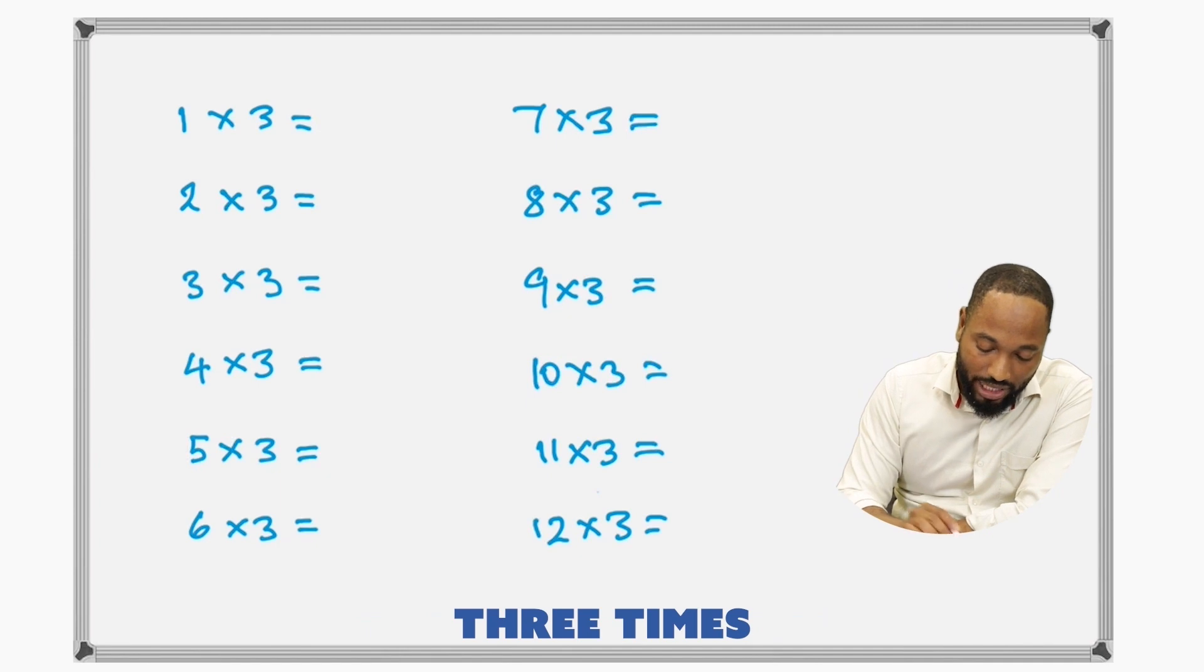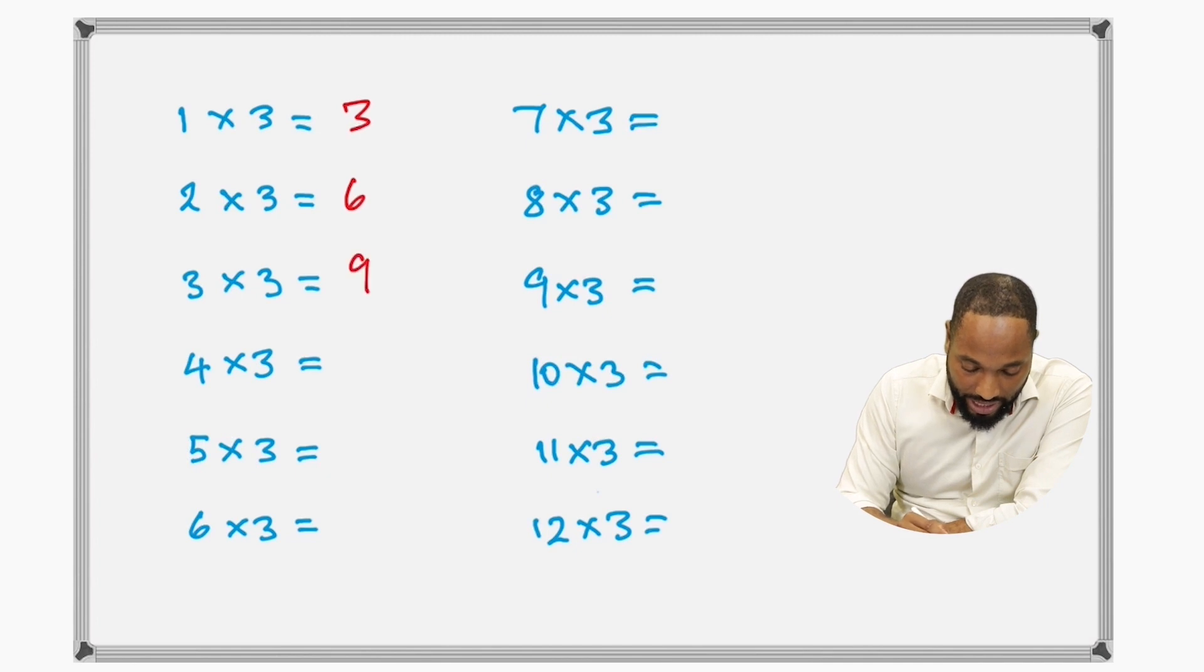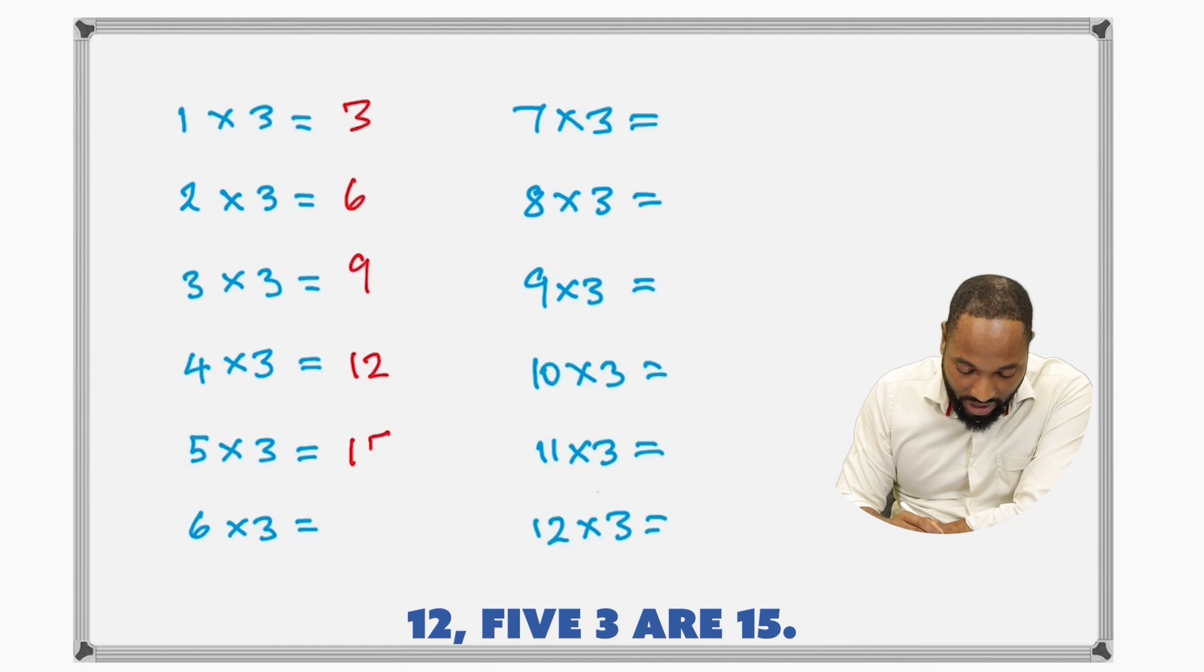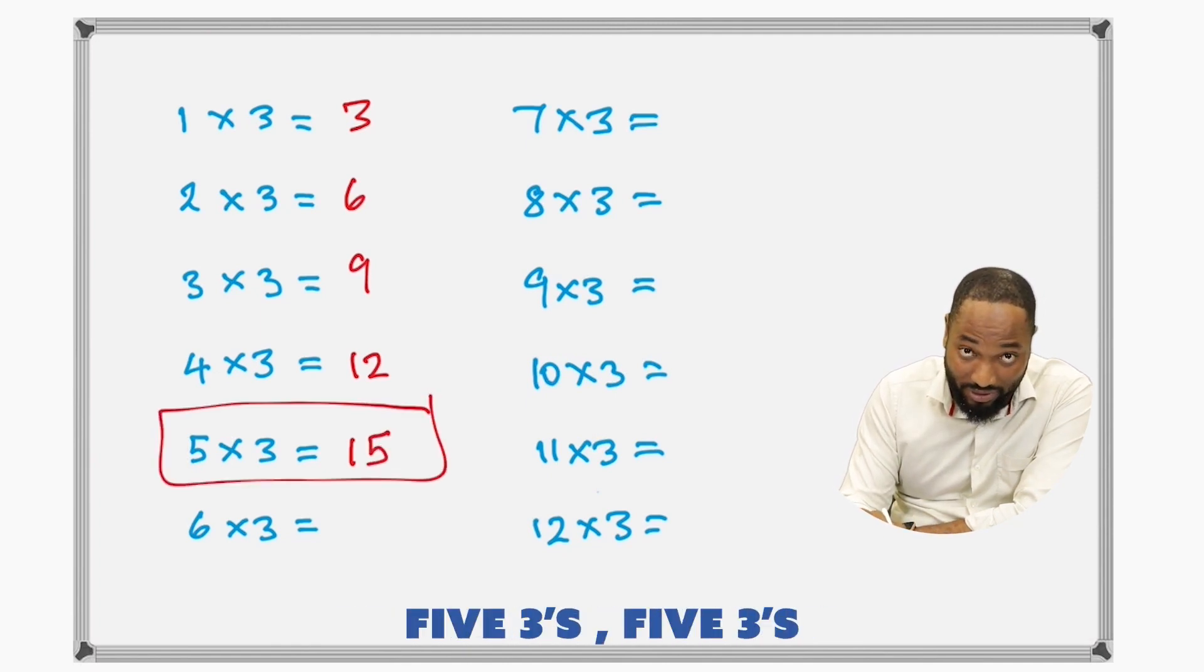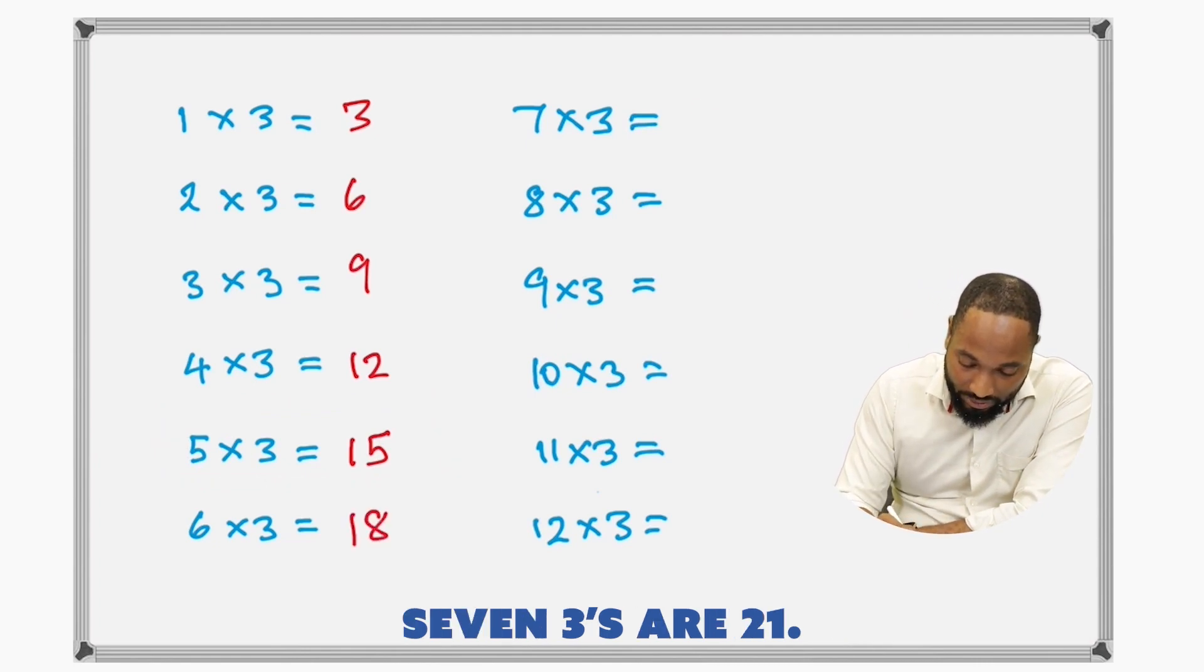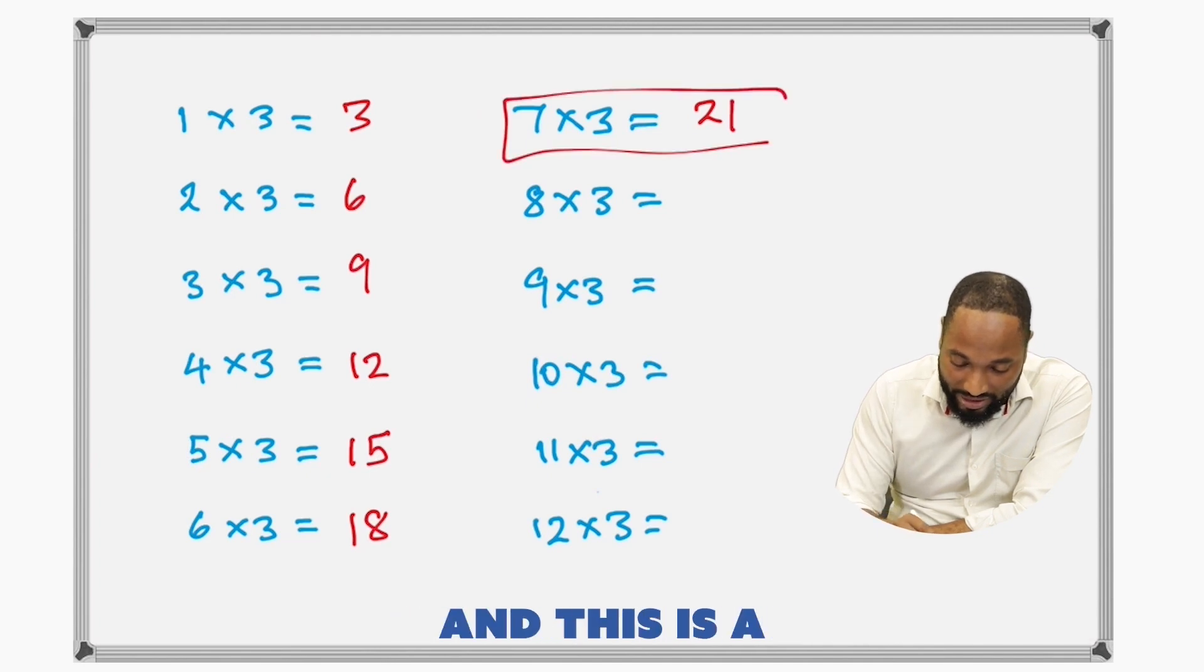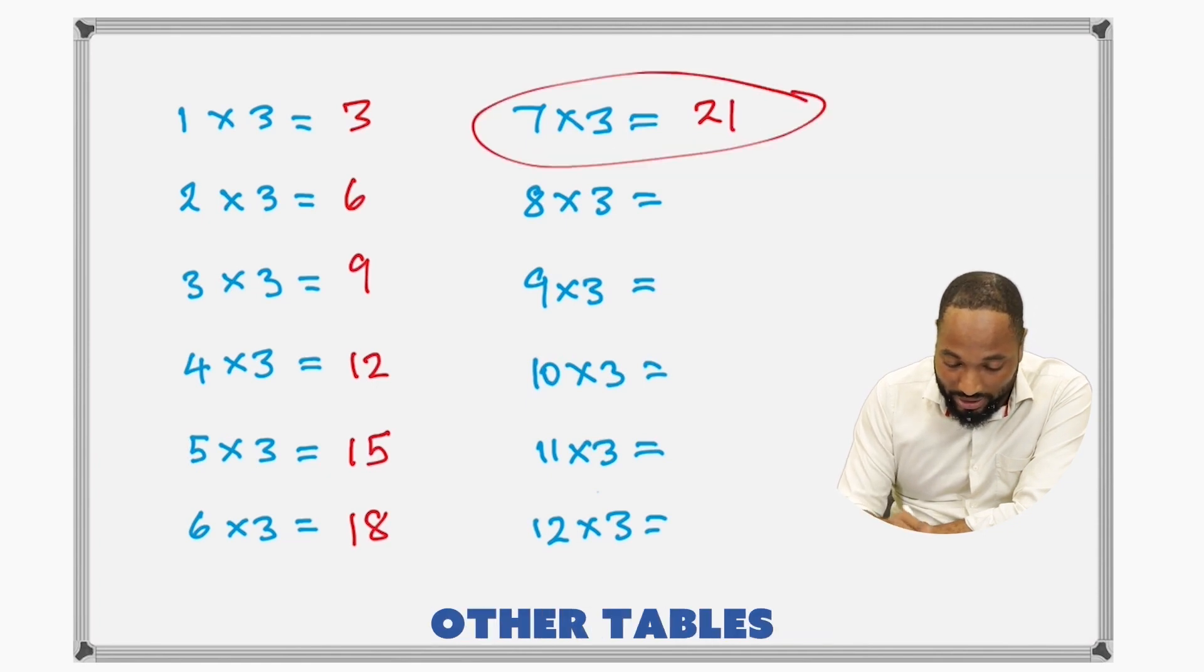3 times table is also pretty simple. 1 times 3 is 3, 6, 9. 4 times 3 are 12, 5 times 3 are 15. This is a really popular guy, but I see this in a lot of questions: 5 times 3, 3 times 5, 15. 6 times 3 are 18, 7 times 3 are 21. Very beautiful multiplication there, and this is a piece of the 7 times table.